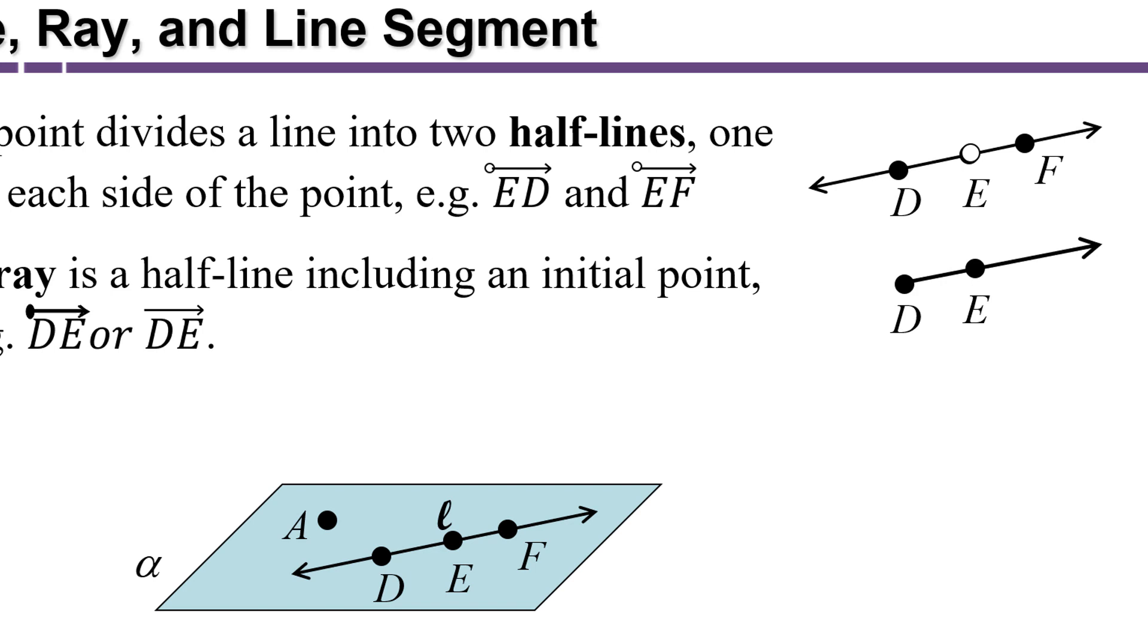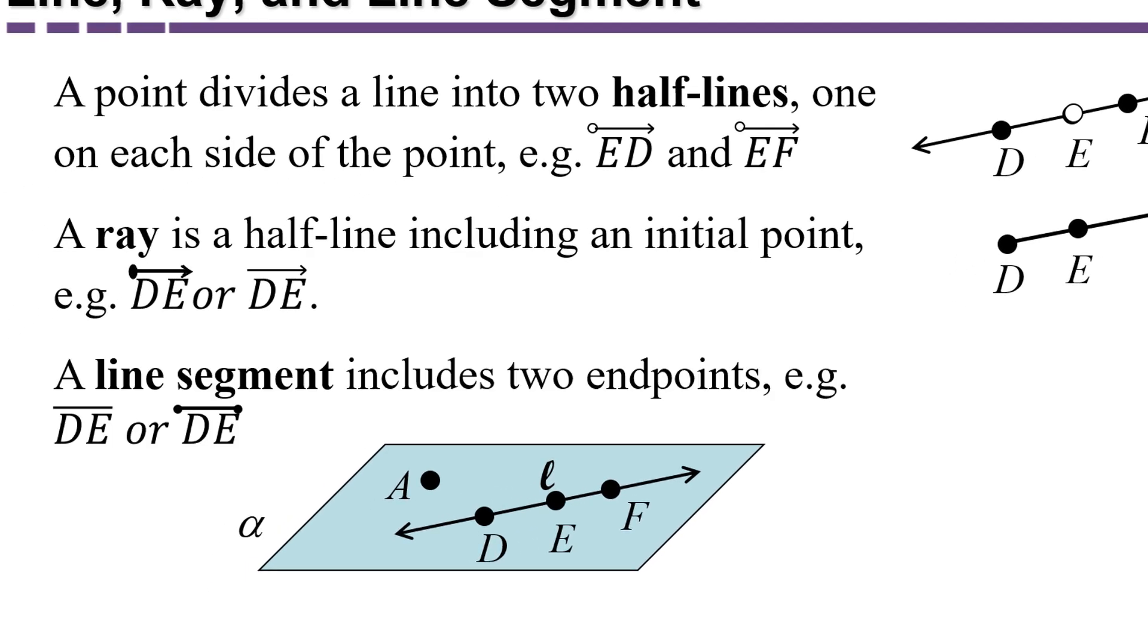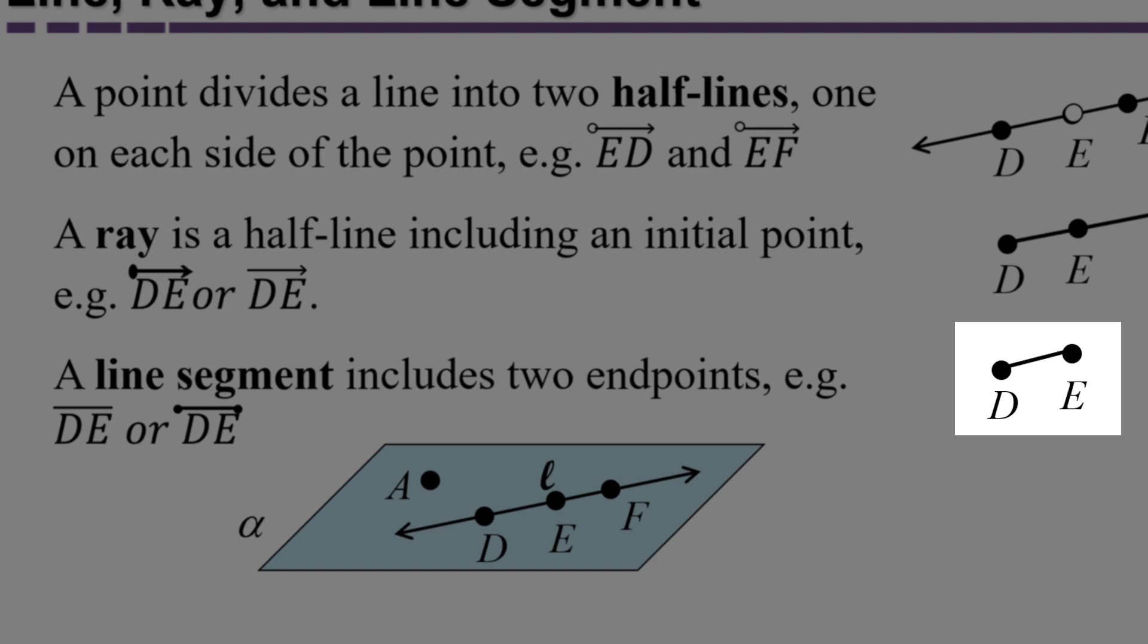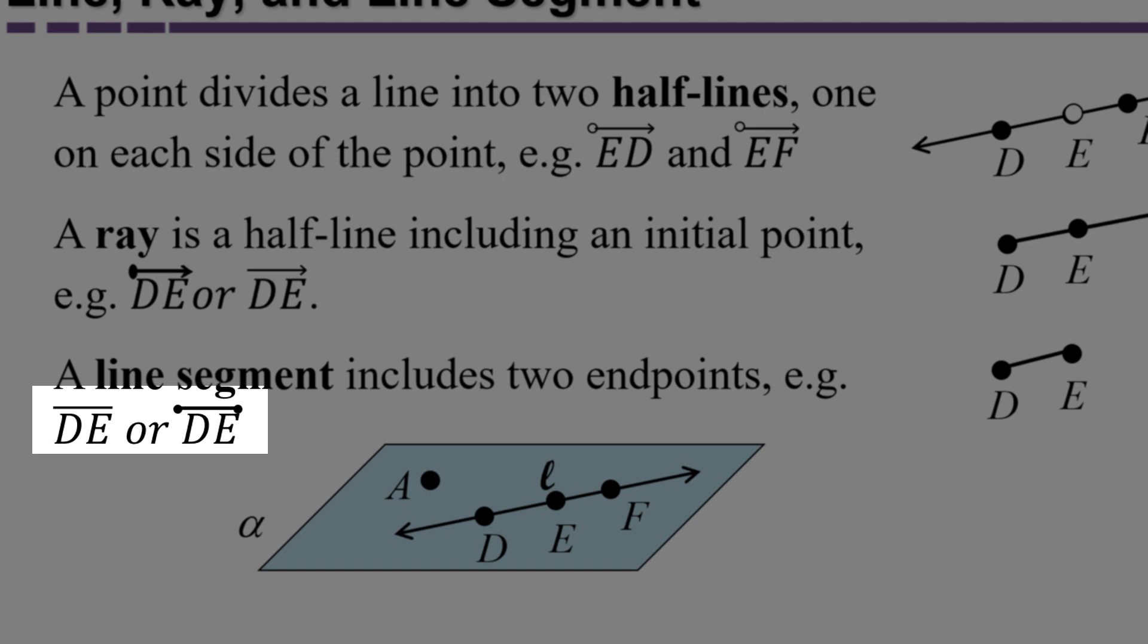A line segment includes two end points. For example, we can see the line segment DE in the center of the line DE. When you're indicating a line segment, you can either just put a little dash above the two letters, or you can put the little dots up there at the ends to show the end points.